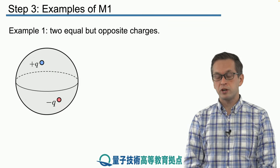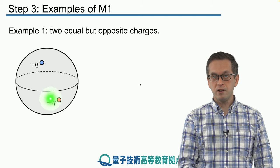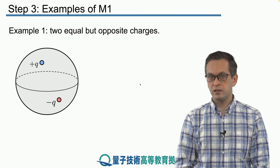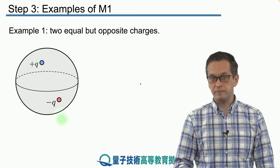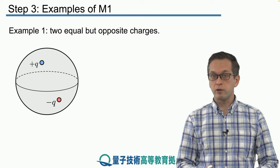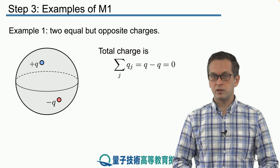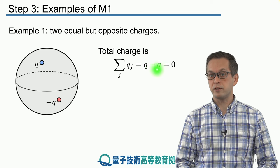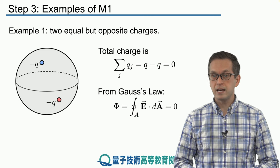First, we're going to consider two charges enclosed by a spherical surface. We've got a charge plus Q and a charge negative Q. The position of these charges doesn't really matter. The thing to bear in mind is that they are equal in size but opposite in sign. We're going to ask: what's the flux of the electric field produced by these two charges going through this closed spherical surface? From Maxwell's first law, we compute the sum of the charges, which is Q minus Q, equal to zero. So the total flux going through this spherical surface is zero.